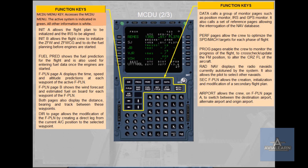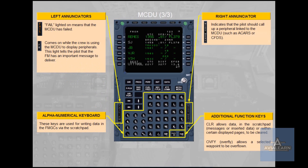SEC Flight Plan allows the creation, initialization and modification of a secondary flight plan. Airport allows the crew on Flight Plan page A to switch between destination airport, alternate airport and origin airport. LEFT ANNUNCIATOR FAIL lighted on means that the MCDU has failed. FM comes on white while the crew is using the MCDU to display peripherals; this light tells the pilot that the flight management has an important message to deliver. RIGHT ANNUNCIATOR MCDU MENU indicates that the pilot should call up a peripheral link to the MCDU, such as Aircraft Communications Addressing and Reporting System or Centralized Fault Display System.